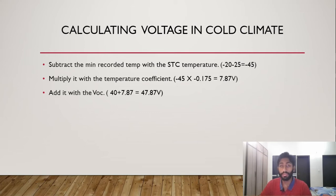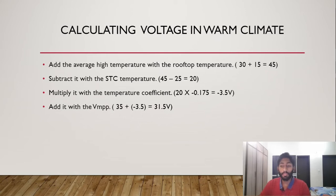For the summer season, on the other hand, you do the same thing, the same procedure. But first you do is you have to add the average high temperature with the rooftop already added temperature of 15 degrees Celsius with 30 degrees Celsius. That gives you 45 degrees Celsius. Subtract with the STC temperature of 25 degrees Celsius, you have 20.